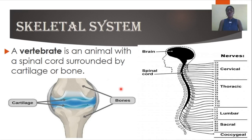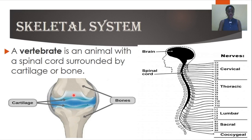A vertebrate is an animal with a spinal cord surrounded by cartilage or bone. You are likely to find bones, and in between sets of bones — or where there is no bone — you expect to find cartilage, a soft tissue which cushions and is flexible enough to support the bones for articulation and movement. This is what we refer to as a vertebrate.